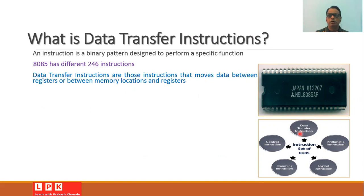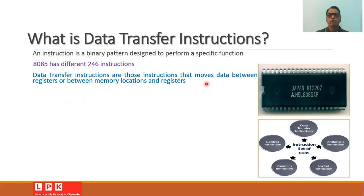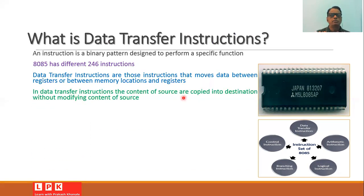These instructions can be classified into different categories such as data transfer instructions, arithmetic instructions, logical instructions, branching instructions, and control instructions. Data transfer instructions are those instructions that move data between the registers of the microprocessor or between registers and memory locations. The content of the source is copied into the destination while the source content remains as it is, and therefore these instructions are also called copy instructions.